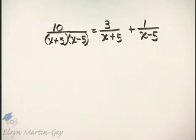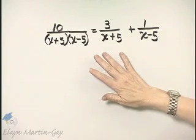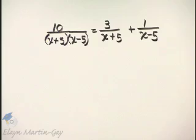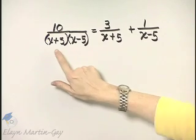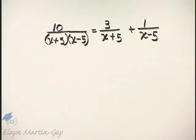Let's solve this equation. Notice this equation contains rational expressions. Notice I already factored the first denominator. It was x squared minus 25, the difference of two squares. So here it is in factored form.